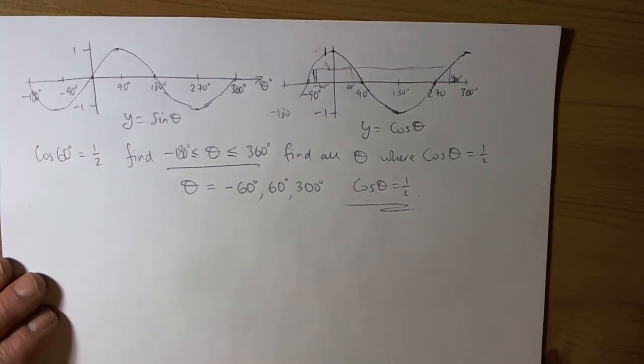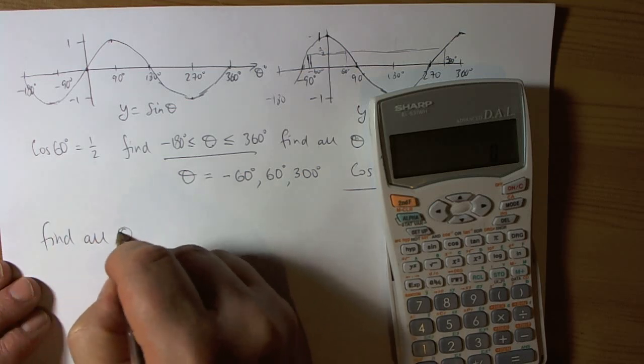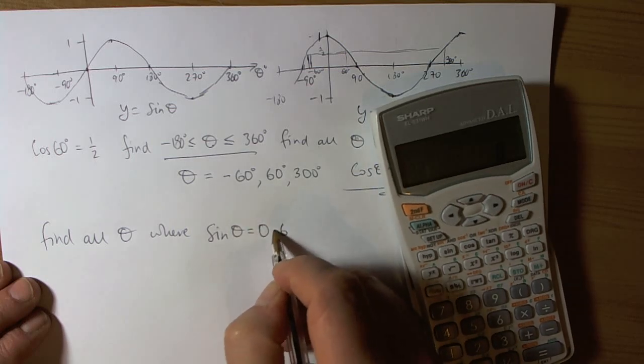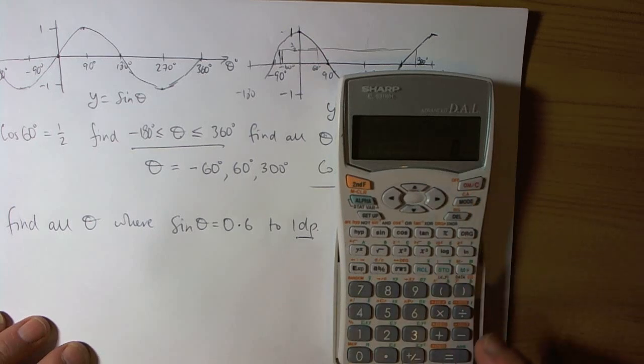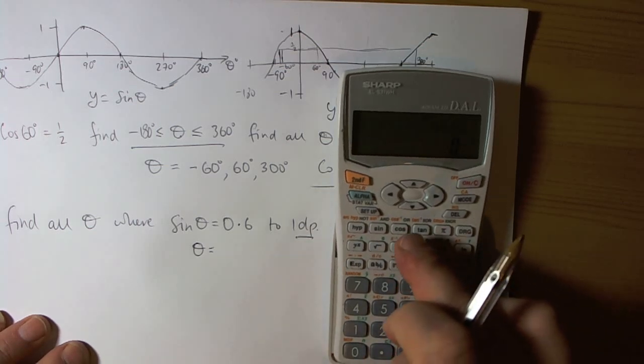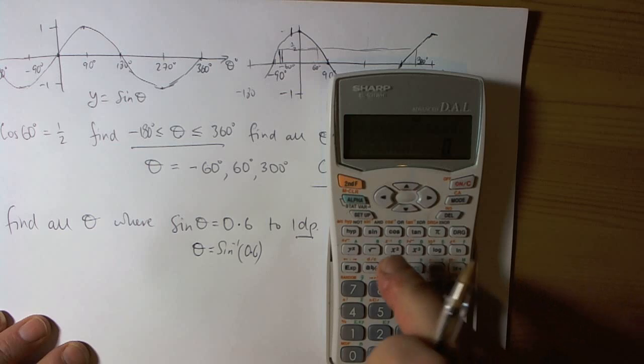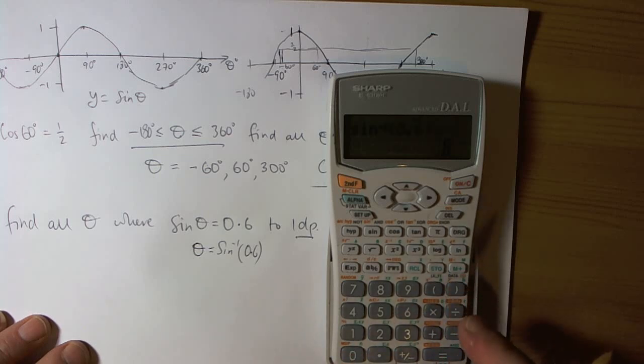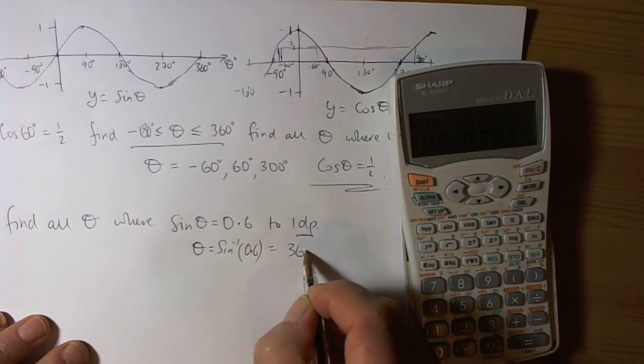Other kind of questions they could give you is, they might even give you a calculator question, where they might say to you, find all theta where the sin of theta equals 0.6 to one decimal place. So they're going to say to you the sin of theta equals 0.6. So we use our calculator to work out what theta is. So we need the inverse sine to get the answer. So we need the inverse sine of 0.6. So second function sine to the minus one, 0.6 equals, so 36.9 degrees. As they said to work to one decimal place, so 36.9 degrees.